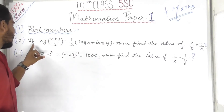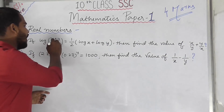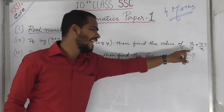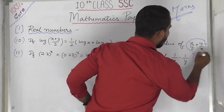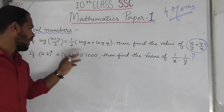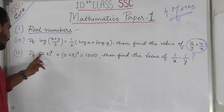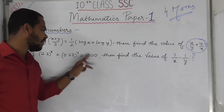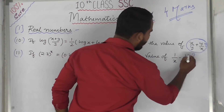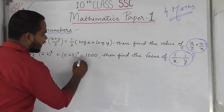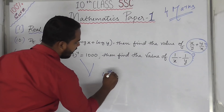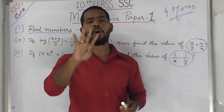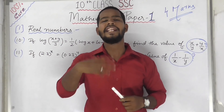The fourth model has two important questions. First: if log x plus y by 3 equals log x plus log y, find the value of x by y plus y by x. Second: if 2.3 to the power x equals 0.23 to the power y equals 1000, find the value of 1 by x minus 1 by y. These are the fourth model questions from real numbers.